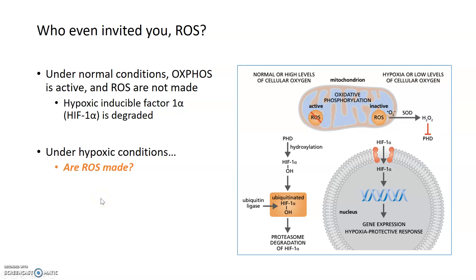At this point, you might be thinking: why would we ever want to have reactive oxygen species within a cell if they're so harmful? If they can destroy membranes, degrade proteins, and mutate DNA, then why would we ever want to generate ROS within a cell? Why would evolution not have gotten rid of this mechanism by which ROS is generated?